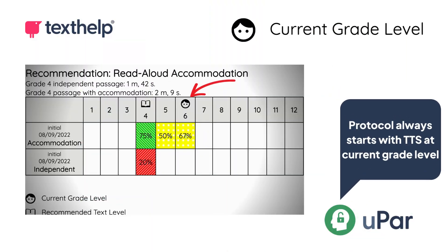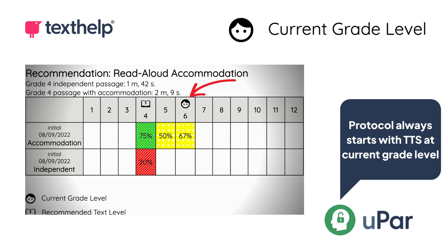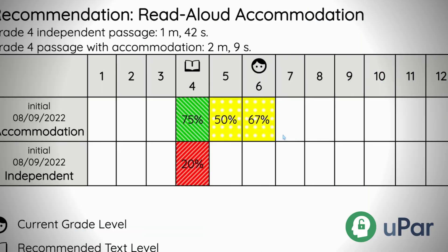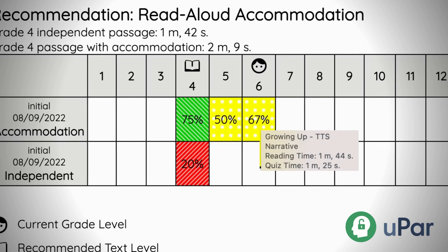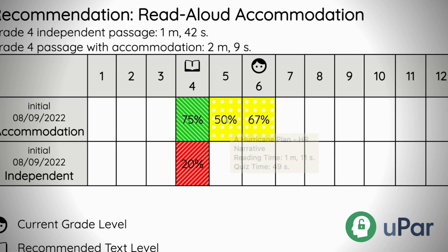When beginning to read a report, always start with the face icon. This indicates the student's current grade level and the grade-level passage they received first with a text-to-speech reader. Hover your cursor over the data square to see more information on the name of the passage, the accommodation used — text-to-speech reader or human reader — the passage genre, reading time, and quiz time.